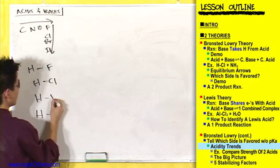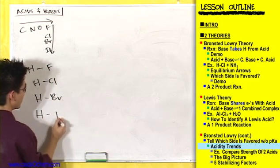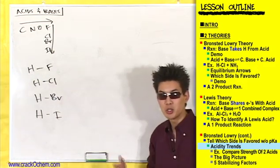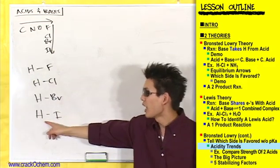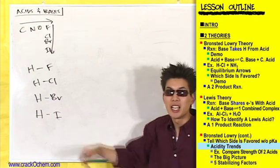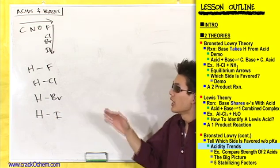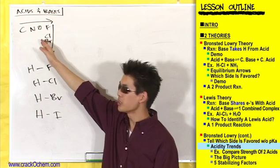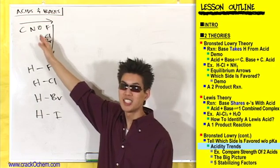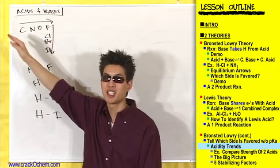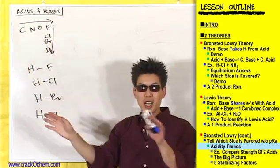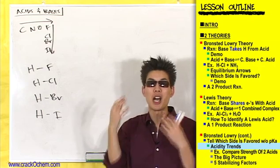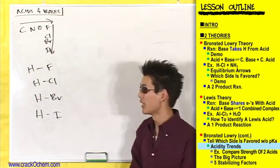For fluorine versus chlorine versus bromine versus iodine, with a hydrogen on each - which one is going to be the most acidic? The hydrogen on the iodine. So I never want to hear you saying that oxygen is more acidic than nitrogen, or nitrogen is more acidic than carbon. We're not talking about those atoms - it's talking about if you have a hydrogen on those atoms.